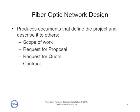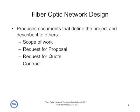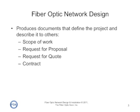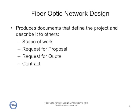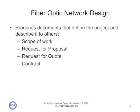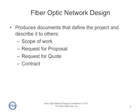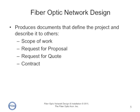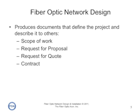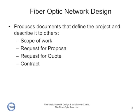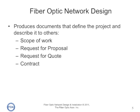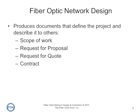The end product of a fiber optic network design is a series of documents that define the network project and describe it for others. A scope of work is a complete overview of the project, generally done as an internal document for planning purposes. A request for proposal will go out to outsiders like contractors to get their ideas on how the design should proceed. A request for quote is pricing from a contractor on exactly the project that you want. And eventually there will be a contract that will refer to these documents and be the legal document for the contractor who is doing the work.